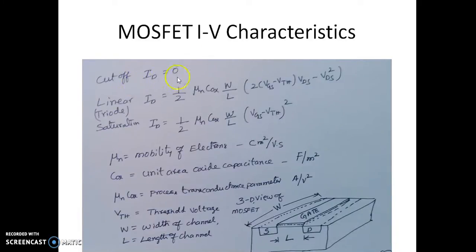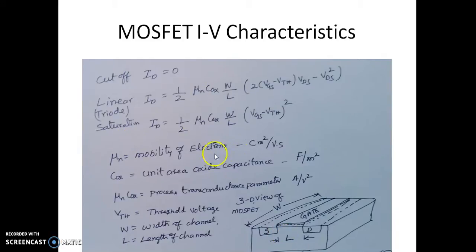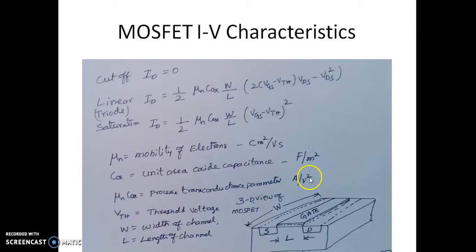The drain current equations for the three regions are: in cutoff, ID equals 0. In the triode region, ID is given by the triode expression. In the saturation region it is given by the saturation expression. Here μn is the mobility of electrons, Cox is the oxide capacitance per unit area in F/m², and μn·Cox is the process conductance parameter Kp in A/V². VTH is the threshold voltage, W is the channel width, and L is the channel length, as seen in the 3D view of the MOSFET.